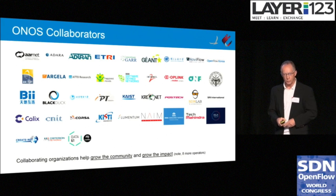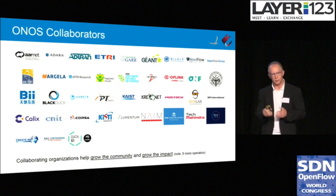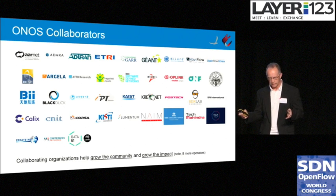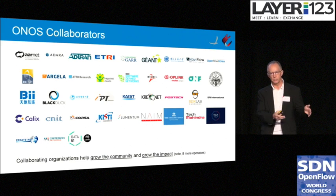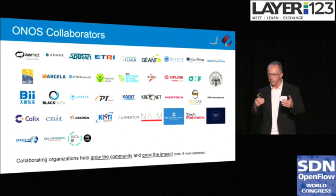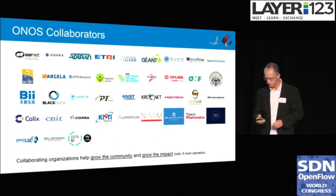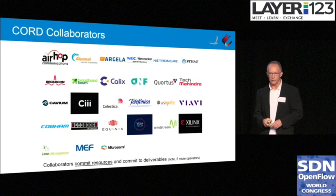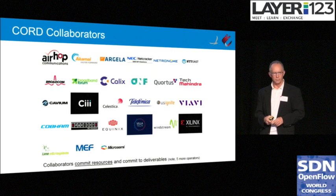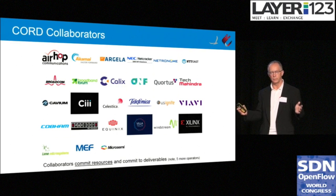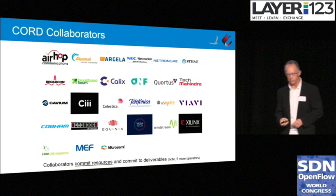These are the collaborators for ONOS. There's quite a wide range of types of organizations collaborating with us. The collaborating organizations help grow the community and grow the impact. Whereas the partners pay and support the engineering team at ONOS, the collaborators do not pay, but they commit resources and deliverables that bring value into the ecosystem. These are the CORD collaborators. Between the ONOS and CORD collaborators, we've now added another dozen service providers as well — so all in all, working with around 20 service providers on different solutions at the moment.